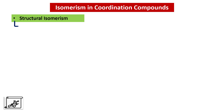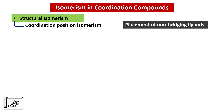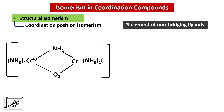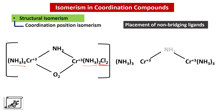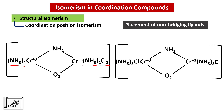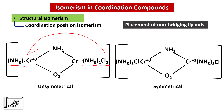Let's move to the next type: Coordination Position Isomerism. It refers to the placement of non-bridging ligands. In the first example, look at the position of six ammonia molecules and two chloride molecules. If the positions of these molecules or ions are exchanged while keeping the bridging ligands the same, this results in Coordination Position Isomerism. Here, one chloride atom is shifted from one chromium atom to the other. The first complex is unsymmetrical in nature, whereas the second is symmetrical.